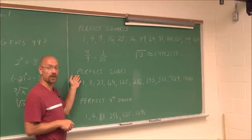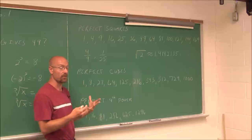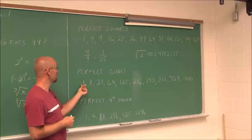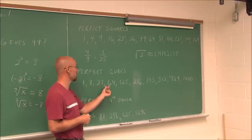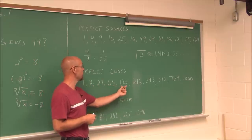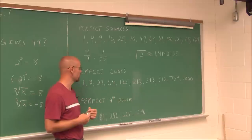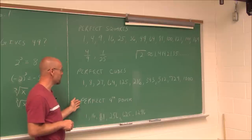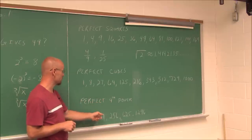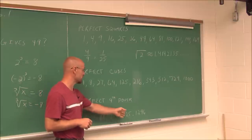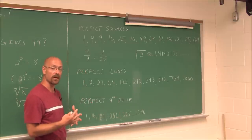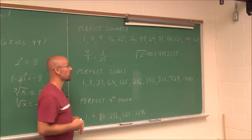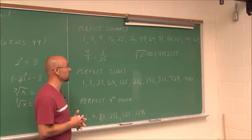We should also know our perfect cubes, at least some of them: 1 cubed is 1, 2 cubed is 8, 3 cubed is 27, 4 cubed is 64, 5 cubed is 125, and so forth. We should also know some perfect fourth power numbers, such as 1, 16, 81, 256, 625, and so on. Recognizing these will save time and help you reach solutions faster.